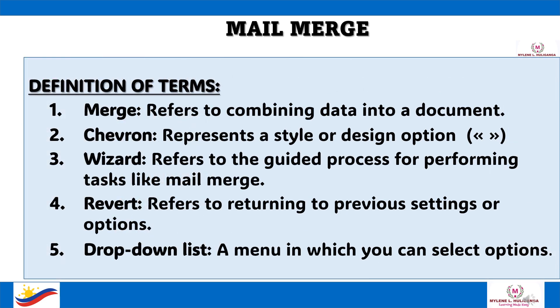Definition of Terms: Merge refers to combining data into a document. Chevron represents a style or design option. Wizard refers to the guided process for performing tasks like Mail Merge. Revert refers to returning to previous settings or options. Dropdown List is a menu in which you can select options.